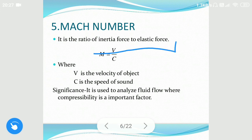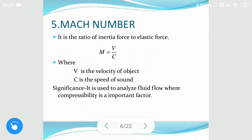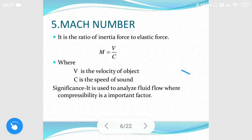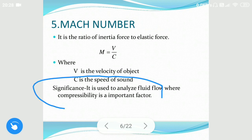The fifth is the Mach number. It is the ratio of inertial force to elastic force, generally given by V divided by C, where V is the velocity of an object and C is the speed of sound — approximately 3×10⁸ m/s, though for sound in air we may take another value, around 348 to 350 meters per second. Mach number is used to analyze fluid flow where compressibility is an important factor.